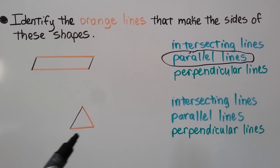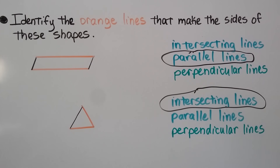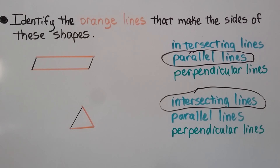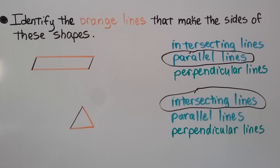Let's look at this triangle. Are these orange lines intersecting lines? If you said yes, you're right. These two orange lines intersect right here. Are the two orange lines parallel lines that never cross or meet? No — we know they intersect right here. They cross right here, they meet right there.